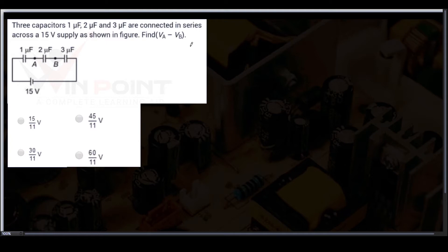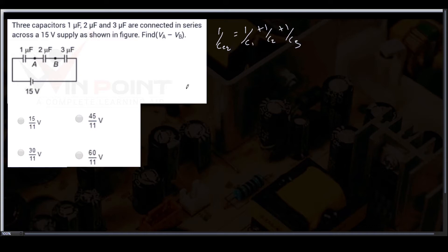For solving this, you need to know two equations. If the capacitors are in series connection, the equation is 1 by C equivalent equal to 1 by C1 plus 1 by C2 plus 1 by C3. If it is in parallel connection, the equation is C equivalent equal to C1 plus C2 plus C3.